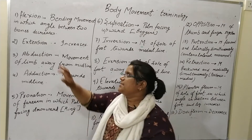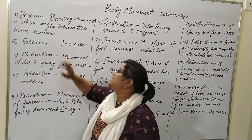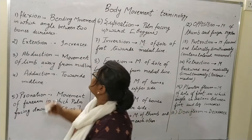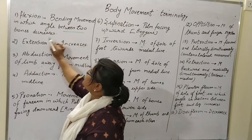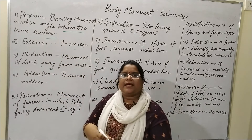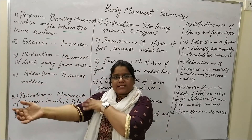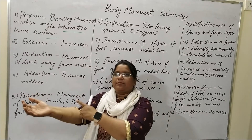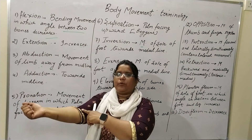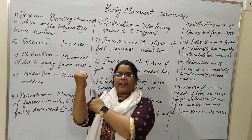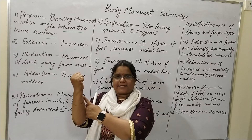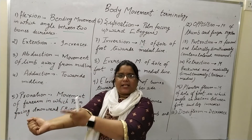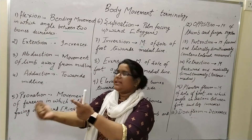First is flexion. Flexion means the bending movement in which the angle between two bones decreases. Here, the two bones — this is the humerus and this is the radius — if I am doing this movement, the bone angle decreases. This is flexion. And if I am doing like this, this is extension, where the angle increases.